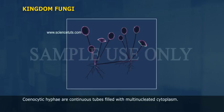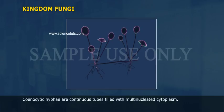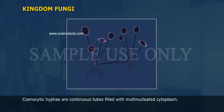Coenocytic hyphae are continuous tubes filled with multinucleated cytoplasm. The cell walls of fungi are composed of chitin and polysaccharides.